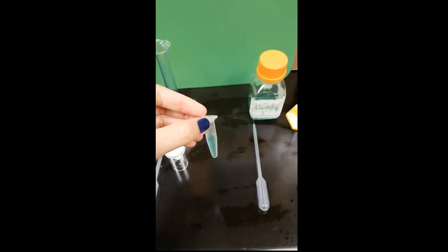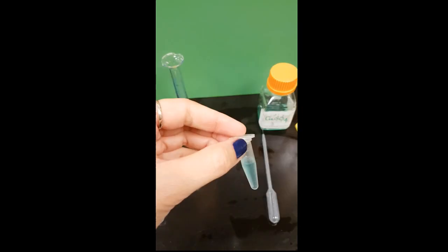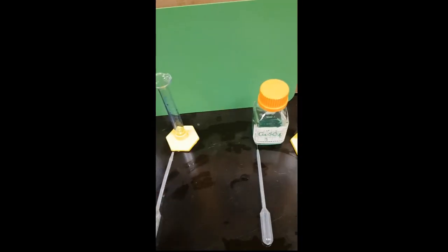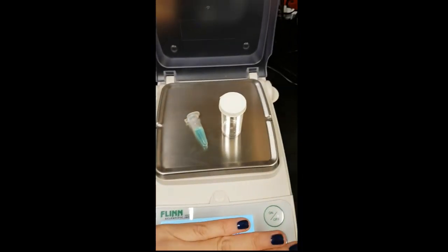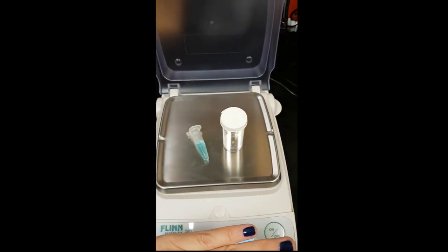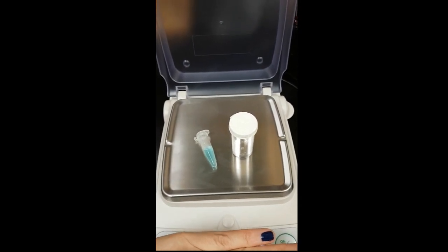After the transfer, you close the cap, place it on the balance, then transfer the sodium hydroxide into the vial. After transferring both chemicals, you place them on the balance and register your reading.